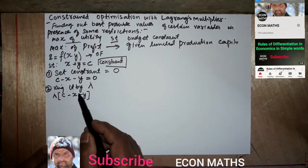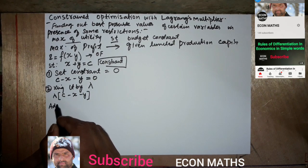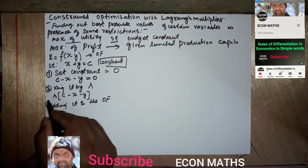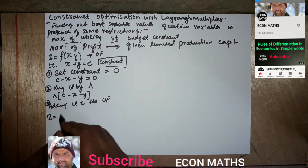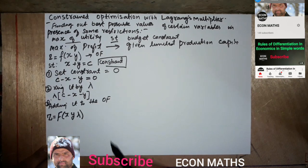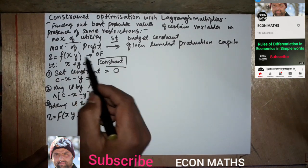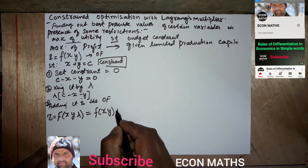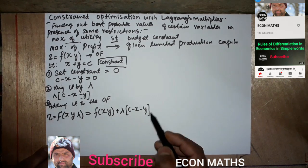The third step is to add this term to the objective function to get the Lagrange's function. So we write Z as a function of three variables — X, Y, and lambda — as: F(X, Y, λ) = F(X, Y) + λ(C − X − Y). This is our Lagrange's function.